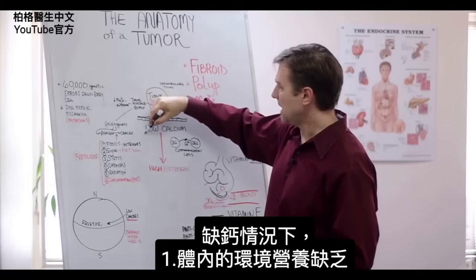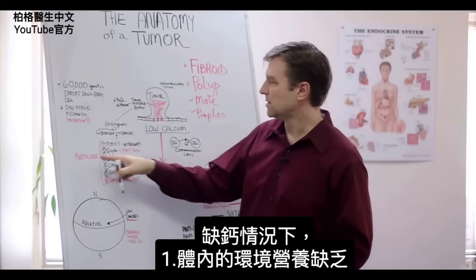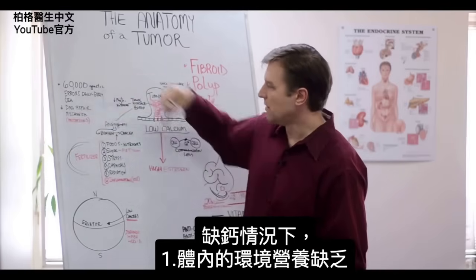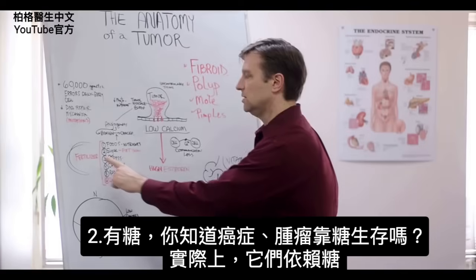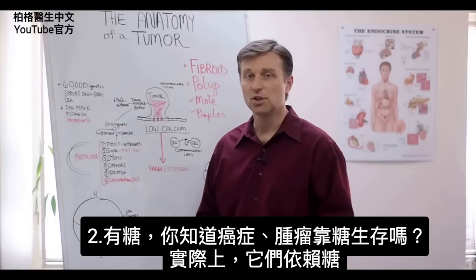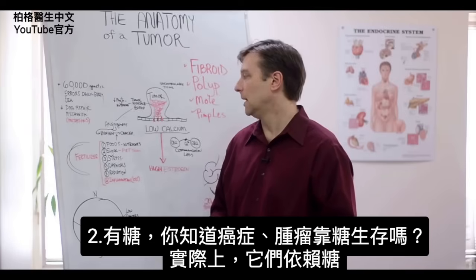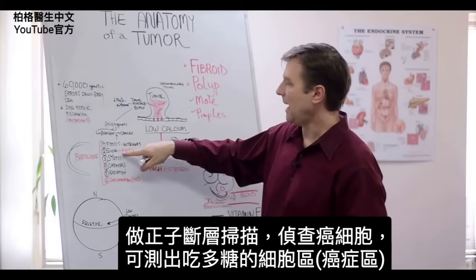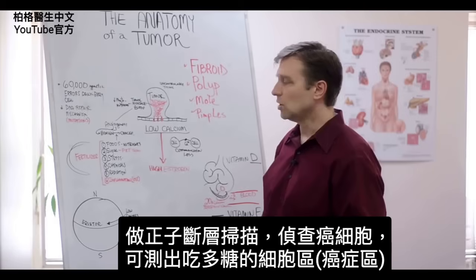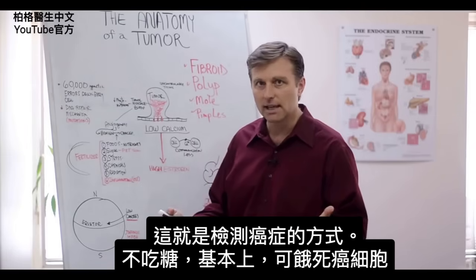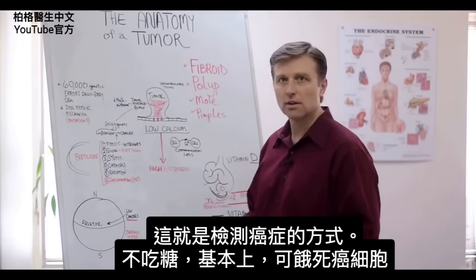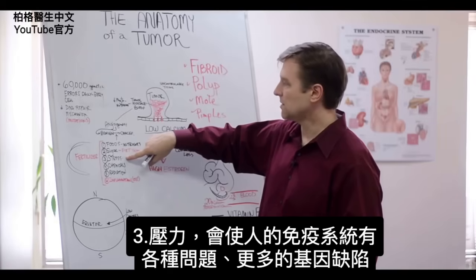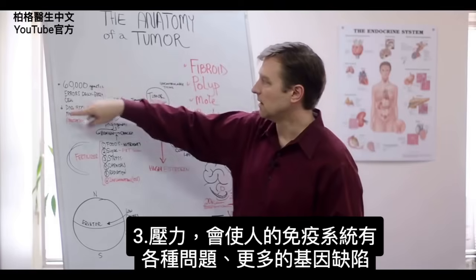This will occur if the soil of your body — the terrain — is fertilized with other factors as well: nutritional deficiencies, sugar. Did you know that cancer and tumors live on sugar? They actually depend on sugar. Even the PET scans that monitor and screen for cancer look for those cells that are eating up all the sugar in the body — that's how they detect cancer. So by not eating sugar, you can basically starve off these cancer cells. Stress will also set a person up for all sorts of problems with the immune system and more genetic defects.